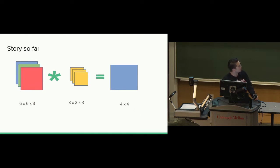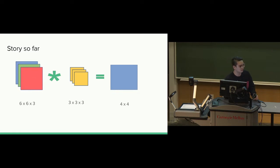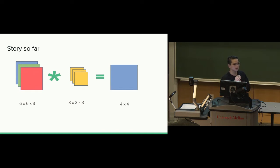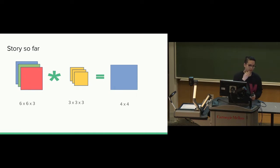Story so far: we have three channels of input convolved with three channels of filter, and we end up with a four by four matrix with only one channel. The dimension shrinks because as we slide the filter along the X and Y axis, the size is reduced. The channel dimension is reduced by summing up the values from each of the filters.